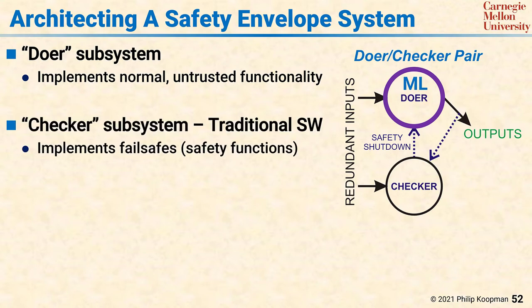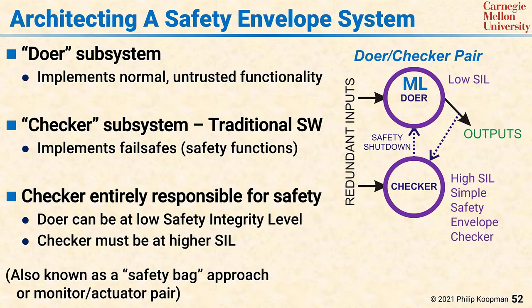That's where the checker comes in. The checker is traditional software not based on machine learning that can be designed to a suitably high SIL. It does not duplicate the function of the doer, but rather implements the safety envelope boundary and detects when the doer's behavior has left the safe state space for the unsafe state space, and can trigger a safety shutdown or other relevant safety action. In this pattern, the checker is entirely responsible for safety. The idea is that the doer does whatever it does and optimizes whatever it optimizes so long as it does not cross the safety envelope boundary.